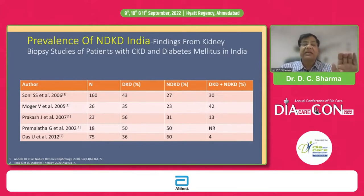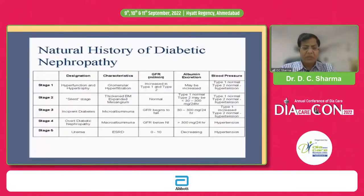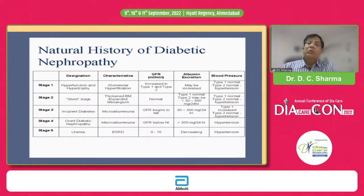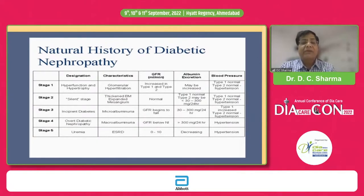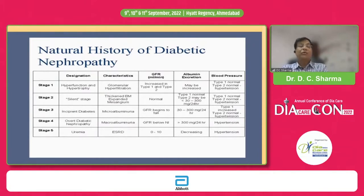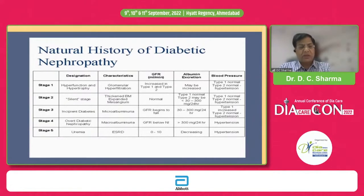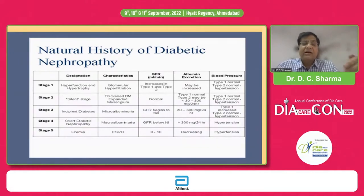Before discussing the clinical markers and clues to suspect non-diabetic kidney disease in a diabetic patient, let us understand some important points of diabetic nephropathy that will help in differentiation. If you review the natural history of diabetic nephropathy, it passes through various stages — Stage 1 through Stage 5 — which evolve over a period of years. At each stage there are biochemical, clinical, and histopathological abnormalities.